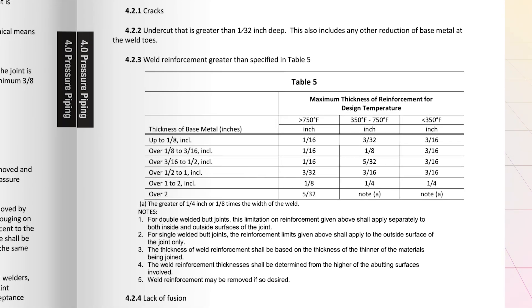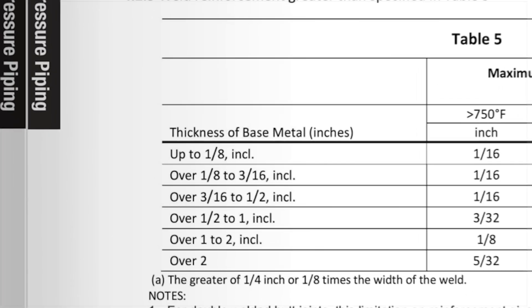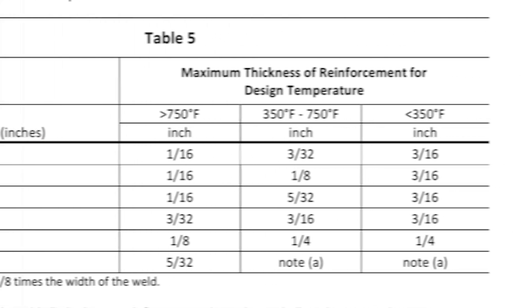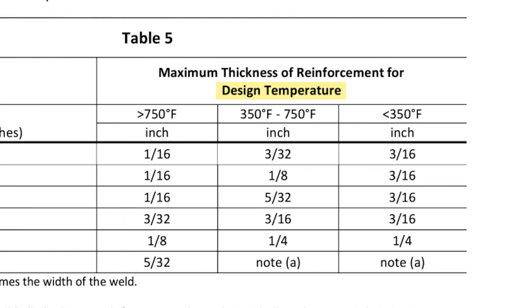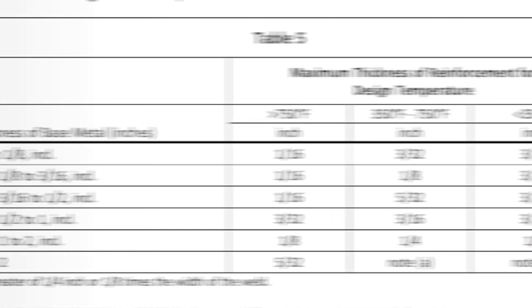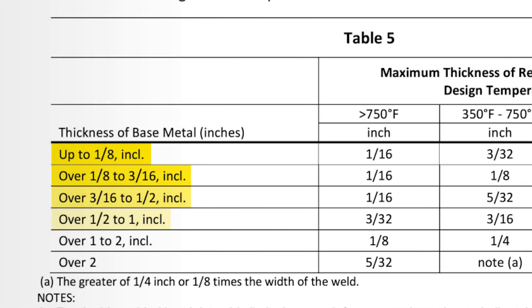Let's check out Table 5 under pressure piping, which covers the maximum allowable weld reinforcement thickness based on two factors: the thickness of the base metal and the design temperature of the piping. The table is split into three columns for temperature ranges — over 750°F, between 350 and 750°F, and below 350°F. Keep in mind that as the temperature decreases, more reinforcement is generally allowed.